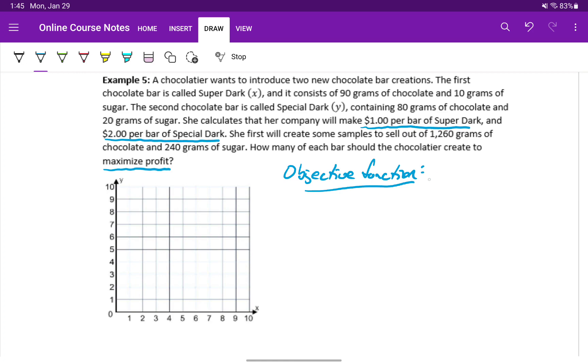She's saying that she'll make $1 per bar of the super dark bar and $2 per bar of the special dark bar. Meaning our objective function is to maximize 1x, or just x, plus 2y. We want to find the x, y pair that gives us the largest possible value for that expression given the specific constraints in the problem.